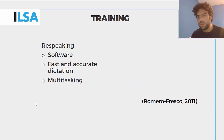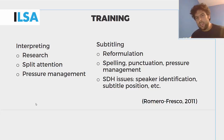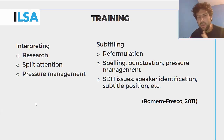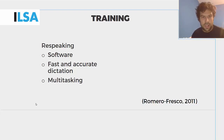Research skills, split attention, and pressure management are important competences from interpreting that are very relevant to re-speaking. Then we have reformulation, spelling, punctuation, pressure management, and subtitling for the deaf and hard of hearing — including speaker identification and subtitling positioning. From re-speaking specifically, there is the very important skill related to the use of the software, fast and accurate dictation, and the ability to multitask while re-speaking.